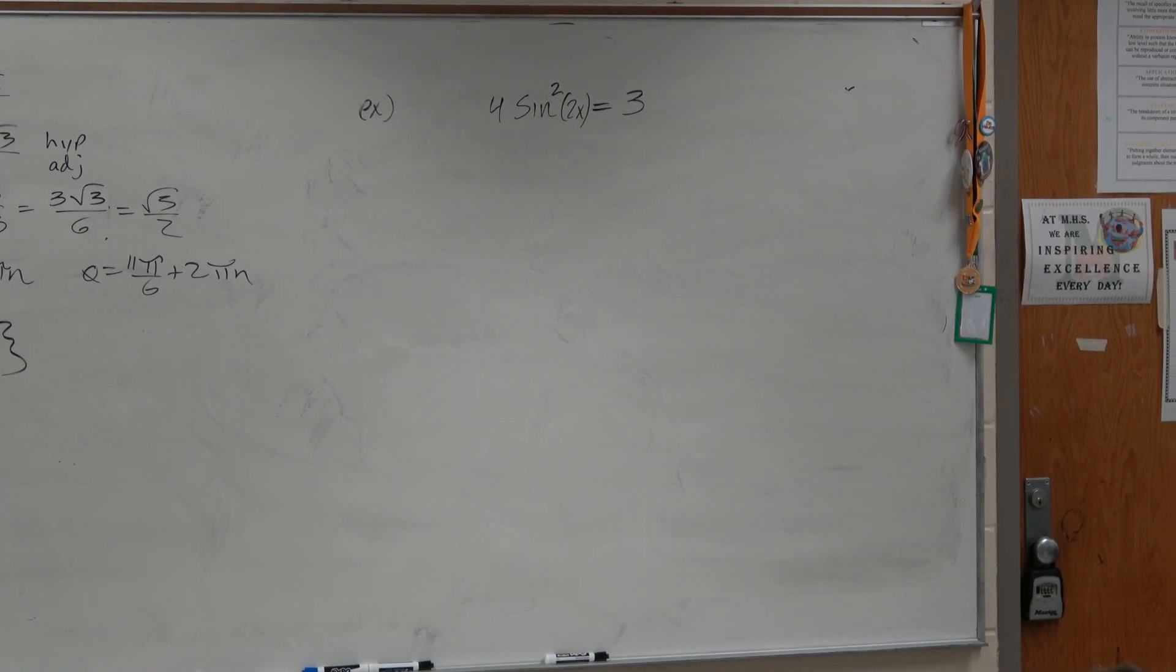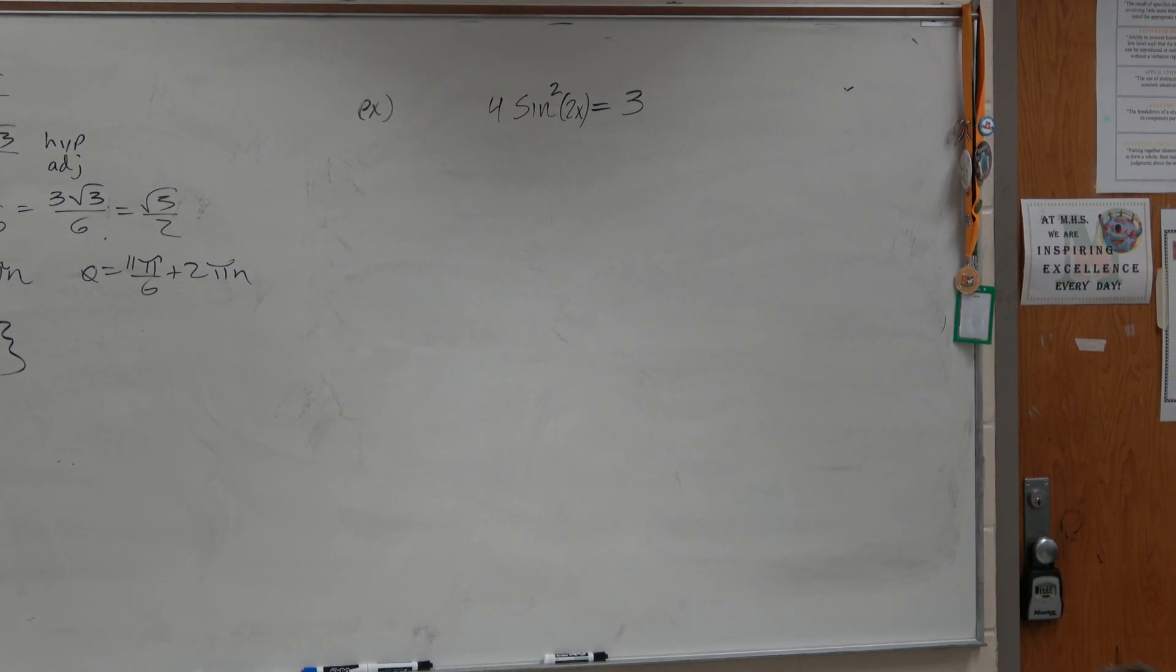In this case, we have 4 sine squared of 2x equals 3. And what we're going to do is we're going to find all the solutions as well as find the solutions between 0 and 2π.